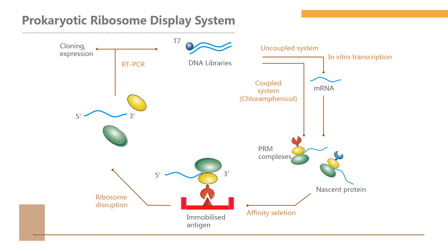In the Uncoupled E. coli S30 system, the transcription and translation stages are performed separately. mRNA is obtained from native sources or in vitro transcription and introduced into an E. coli S30 translation system lacking DTT. A number of additional components need to be added — for example, when displaying folded single-chain antibody fragments (scFv): protein disulfide isomerase, vanadyl ribonucleoside complexes, and anti-ssrA antisense oligonucleotide are added to promote folding of antibody fragments, stabilize mRNA, and inhibit the action of ssrA RNA, respectively.